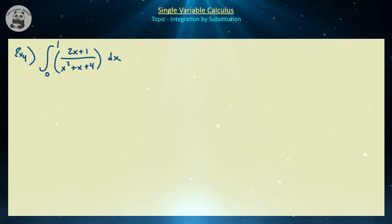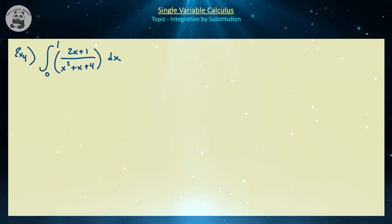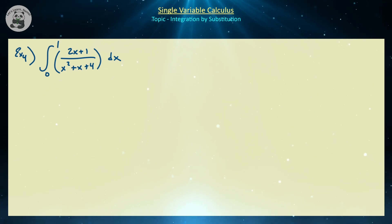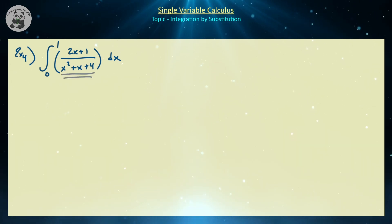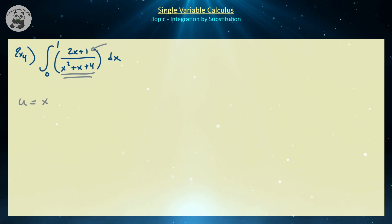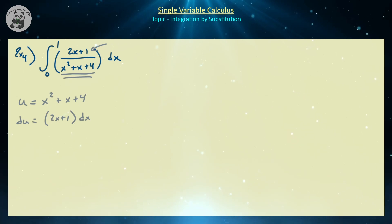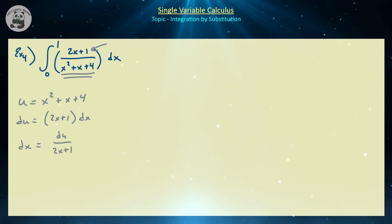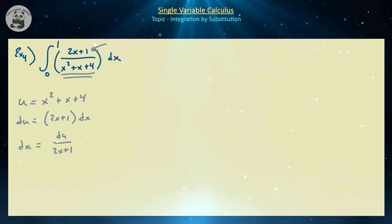Let's consider the definite integral from 0 to 1 of (2x+1) over (x²+x+4). Note this is a definite integral, so we're looking for a number. We notice a quadratic on the bottom and a linear function on top — derivatives of quadratics are linear. So let u equal x²+x+4; then du equals 2x+1 dx. Since dx equals du over (2x+1), the 2x+1 terms cancel.